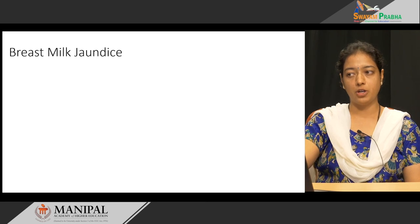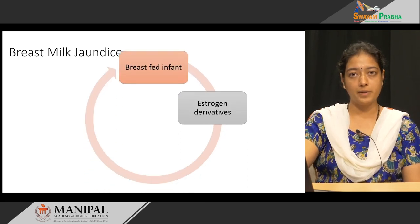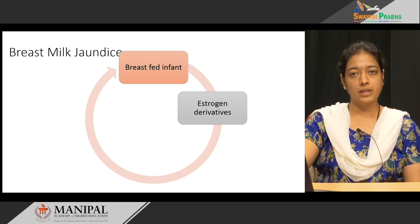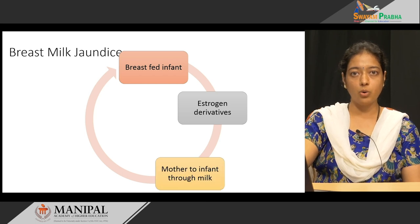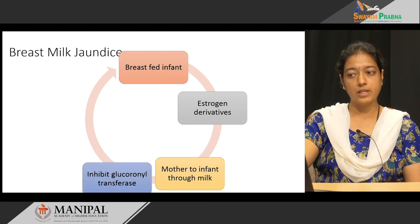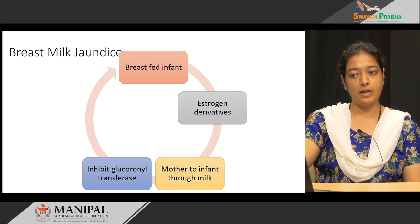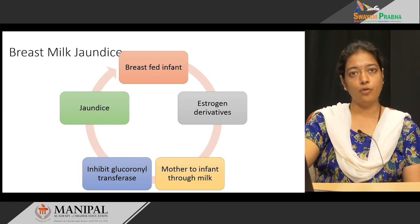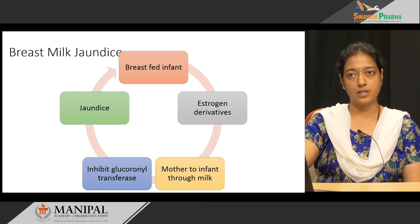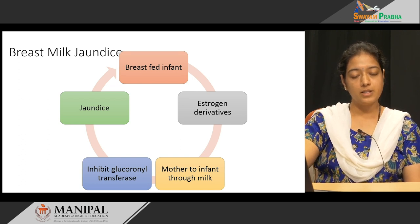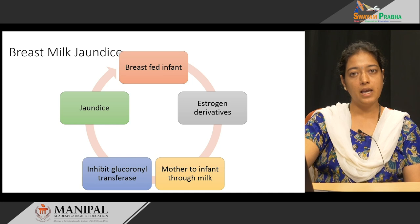In breast milk jaundice, infants who are breastfed receive estrogen and its derivatives from the mother through the milk. These estrogen derivatives inhibit glucuronyl transferase, which inhibits the conjugation of bilirubin, leading to increased total bilirubin and thereby causing jaundice.